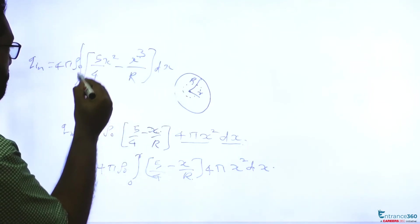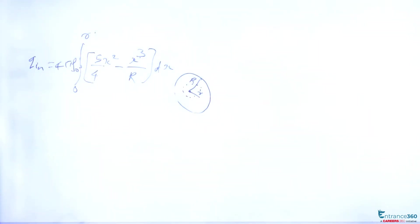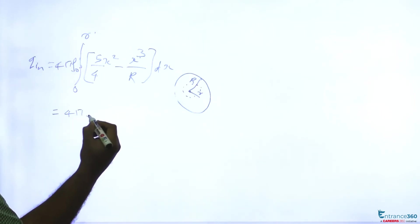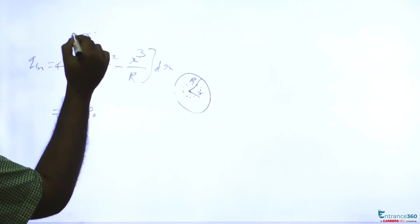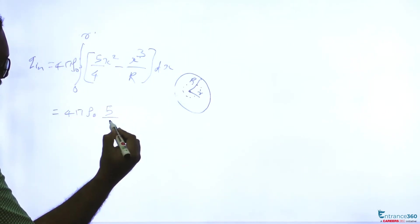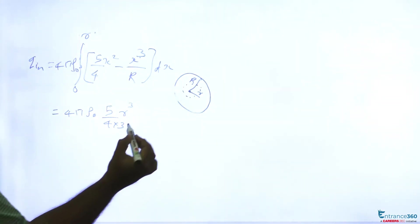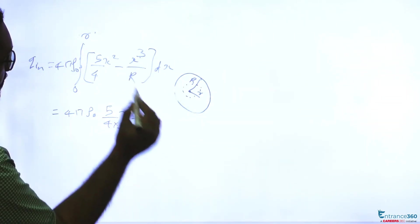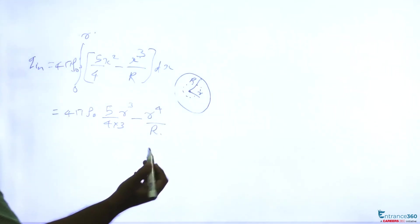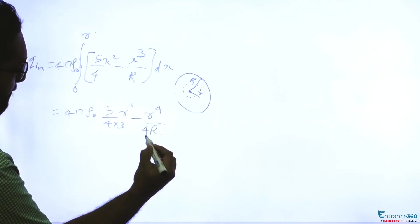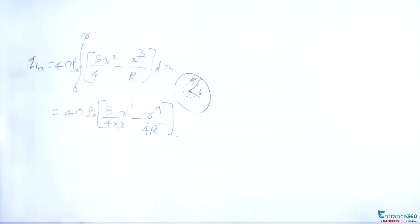We are integrating from 0 to r. So on integration 4πρ₀, this will be x³/3. We are substituting the limit, so it will be (5/4)r³ - x⁴/4. We are substituting the limit r. So this is the net charge enclosed.